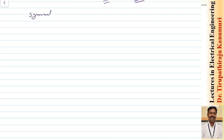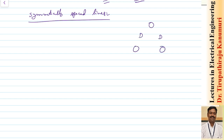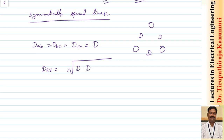For symmetrically spaced three-phase lines, D_AB = D_BC = D_CA = D. Therefore D_eq = ∛(D · D · D) = D. Substituting into the capacitance formula gives C_AN = 2π ε₀ / ln(D / r).